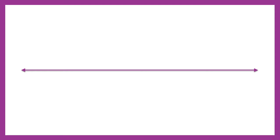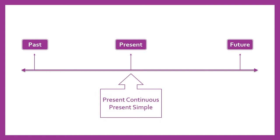First of all, if we draw a timeline, we can differentiate among three times: the past, the present, and the future. We have already seen the present continuous and now we're going to talk about the present simple.